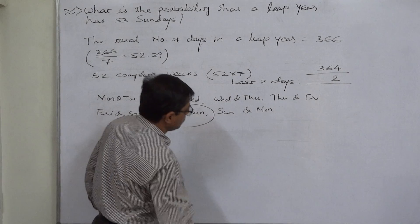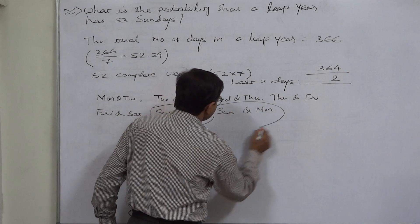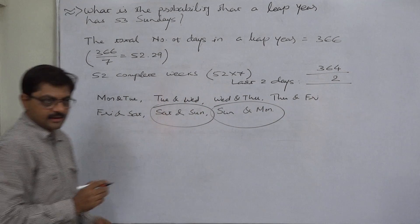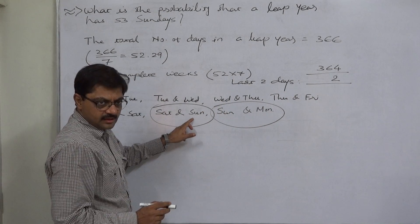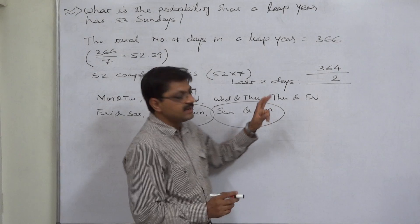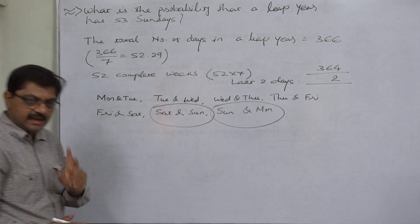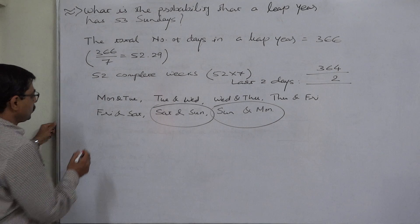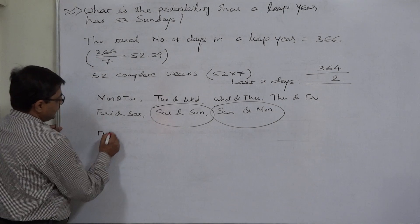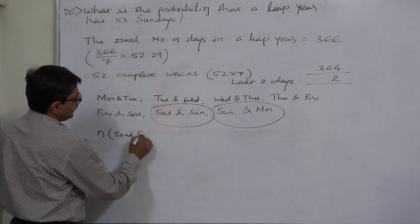In which there can be Sunday? If these last two days are Saturday and Sunday, or Sunday and Monday, then only there can be 53 Sundays in a leap year. So the number of cases favorable to 53 Sundays are now two.